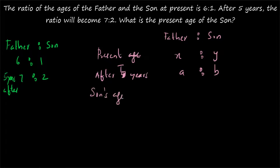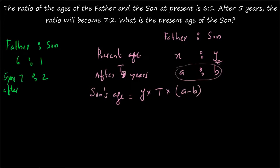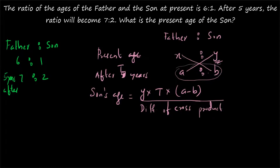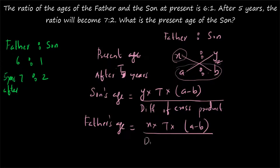Son's age will be equal to y into T into (a minus b), divided by the difference of the cross product. Always a minus b will be positive. a will always be greater than b because we are always taking the father to son ratio. The cross product means x into b and a into y — you take the difference of these cross products. Father's age is equal to x into T into (a minus b), divided by the difference of the cross product — just replace y with x.